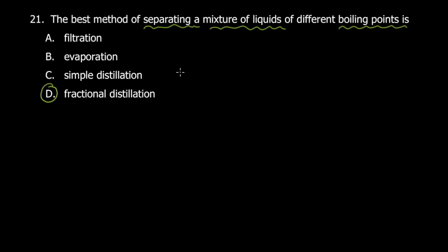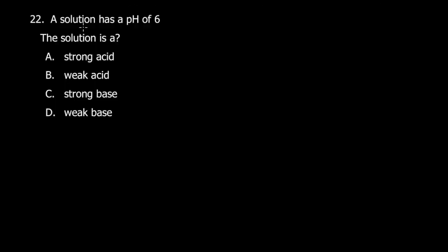In simple distillation, the water changes to water vapor. Water vapor is what you see when something is boiling; steam is what you don't see. So there's a change in phase. Let's quickly move to the next question.